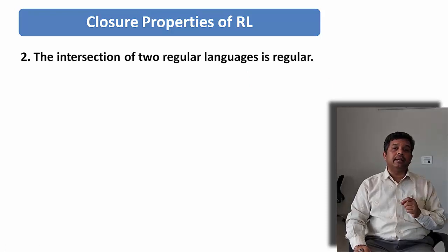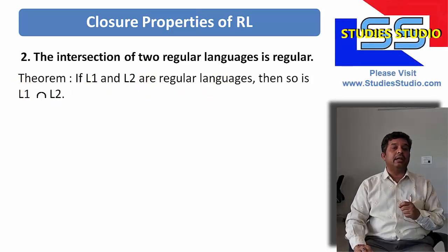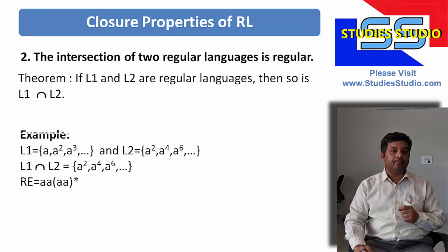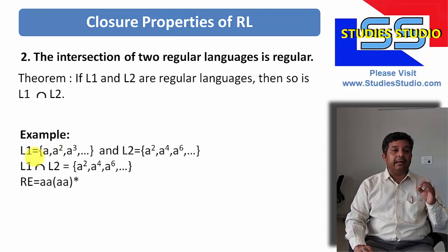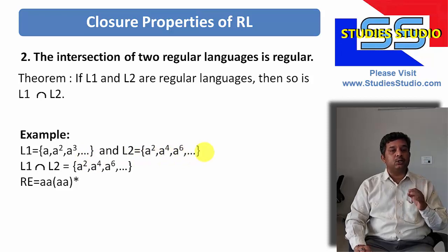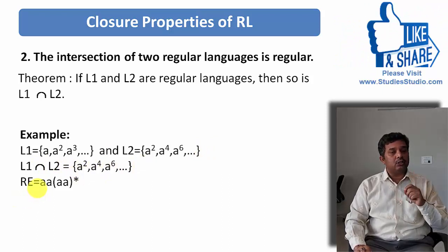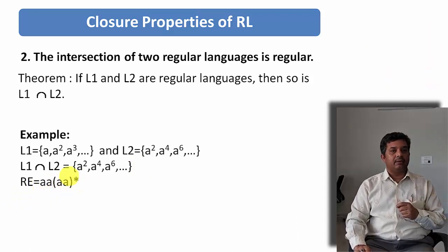Let us take another property: the intersection of two regular languages is regular. If L1 and L2 are two regular languages, then L1 intersection L2 is also regular. For example, let L1 contain A, A², A³ and all powers of A, and L2 contain A², A⁴, A⁶ — all the even powers of A. Then their intersection will be A², A⁴, A⁶, and so on, and the corresponding regular expression will be (AA)(AA)*.